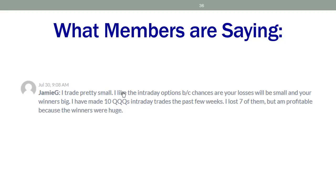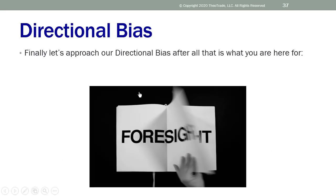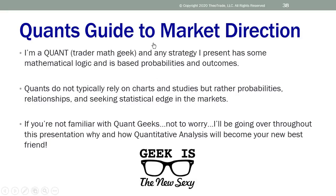Now that we've got through some trade logic, let's approach directional bias — that's what people always want to see. They want foresight and insight to the marketplace. This is a quant's guide to market direction. I am a quant — a trader math geek. I grew up around trader math geeks. Any strategy I present is going to have mathematical logic based on probabilities and outcomes. I don't look at the MACDs, Fibonaccis, and Bollinger Bands to assess direction because they don't give me definitive probabilities — like they don't say you have a 70% chance of X occurring.